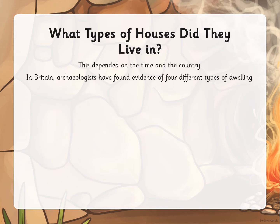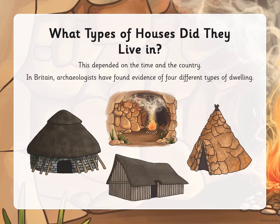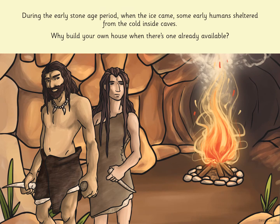In the UK, archaeologists have found evidence of four different types of dwelling, and we're going to learn a little bit more about them now. During the early Stone Age period, when the ice came, some early humans sheltered from the cold inside caves — why build your own house when there's already one available? Have a look at the picture and think: how did they keep warm? They built fires.